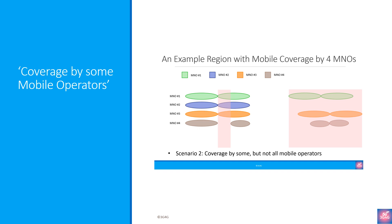Similarly, the names of the areas where there is coverage by some but not all operators differ in different parts of the world. The most common ones are partial dead zones, as opposed to dead zones where there was no coverage, and partial not spots, to indicate some coverage as opposed to not spots with absolutely no coverage. Finally, we have grey spots, which can be used in conjunction with both black spots as well as white spots. The spelling of grey can vary depending on whether you follow British or American spelling.